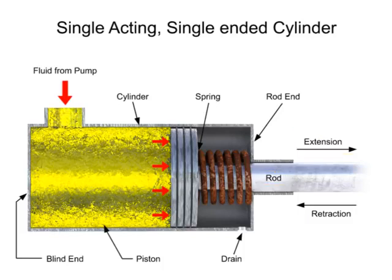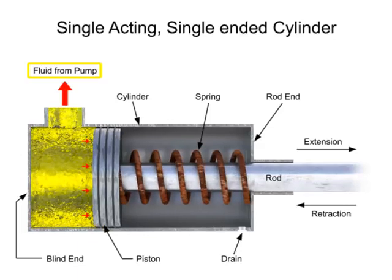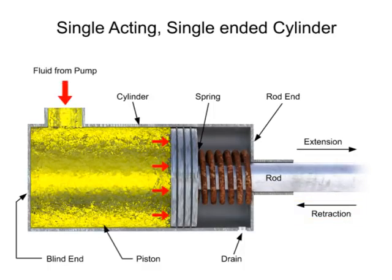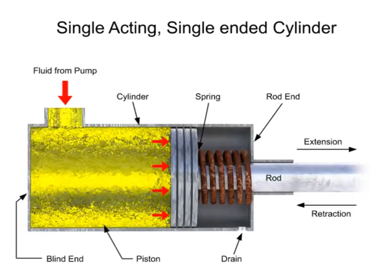When a control valve directs fluid out of the port, the fluid pressure is removed. The force of the spring pushes against the piston in the other direction, and the rod returns to the cylinder. This is called the retraction stroke. Single-acting cylinders are most often found in reciprocating engines, pumps, and hydraulic rams.